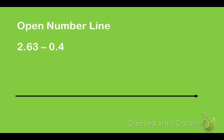In strategy two, I use an open number line. What I'm going to do is take my subtraction problem and change it into an addition problem. You might be asking why — this is a subtraction problem, why are you turning it into an addition problem? Well, the truth is we tend to like to add more than we like to subtract; it's a little bit easier. Using an open number line helps us jump numbers to make it easier. So instead of looking at the problem as taking away 0.4 from 2.63, I'm going to look at it as: what can I add on to 0.4 to get to 2.63? And I'm going to use an open number line to help me.